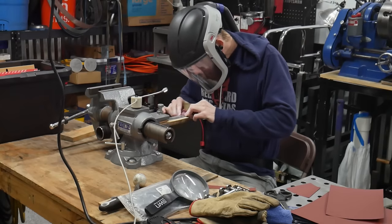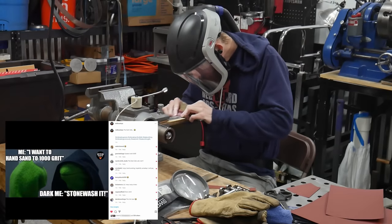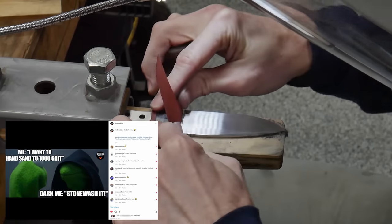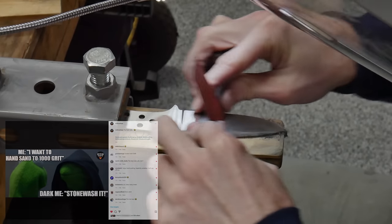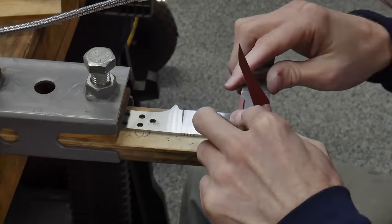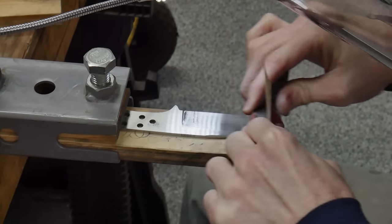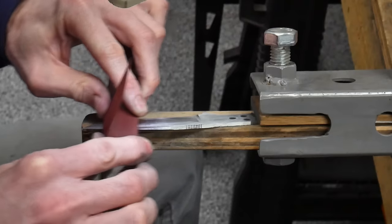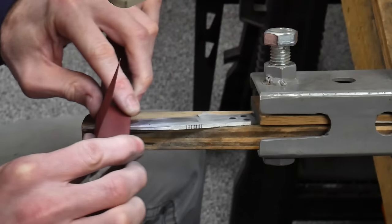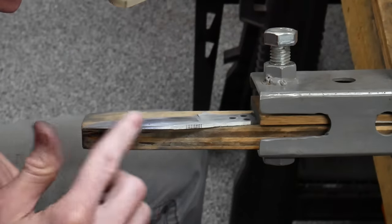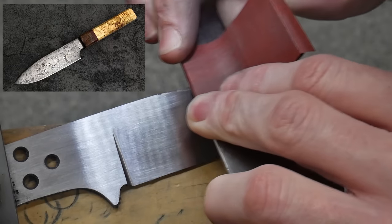I'd be lying if I said there wasn't a devil on my shoulder during this hand sanding process whispering in my ear, 'Red Beard, you should just stonewash this blade, come to the dark side.' But for the sake of variety I resisted and continued on with the satin finish. One thing I did differently with this blade was rounding the corner some on the spine. I really like how this turned out in my recent kitchen knife build and wanted to incorporate that method here.